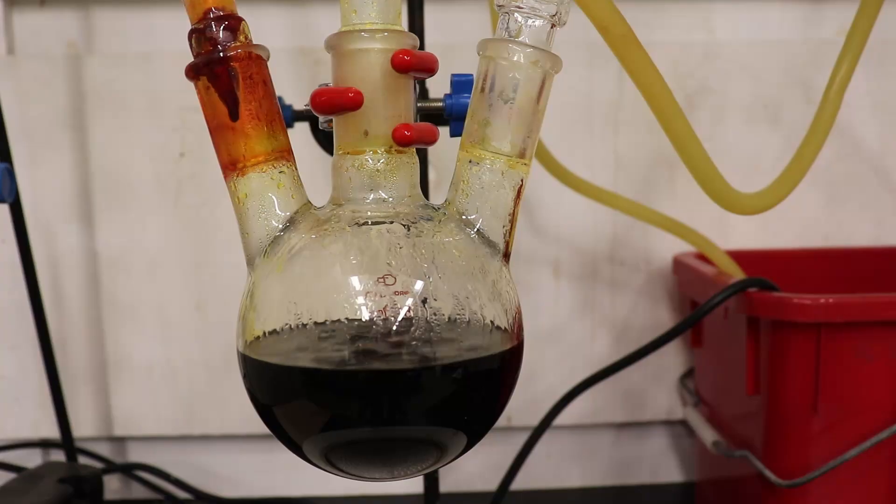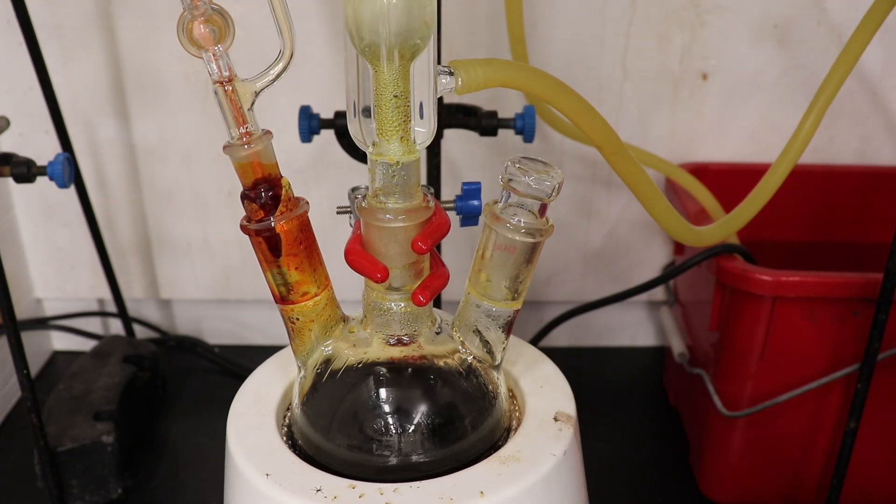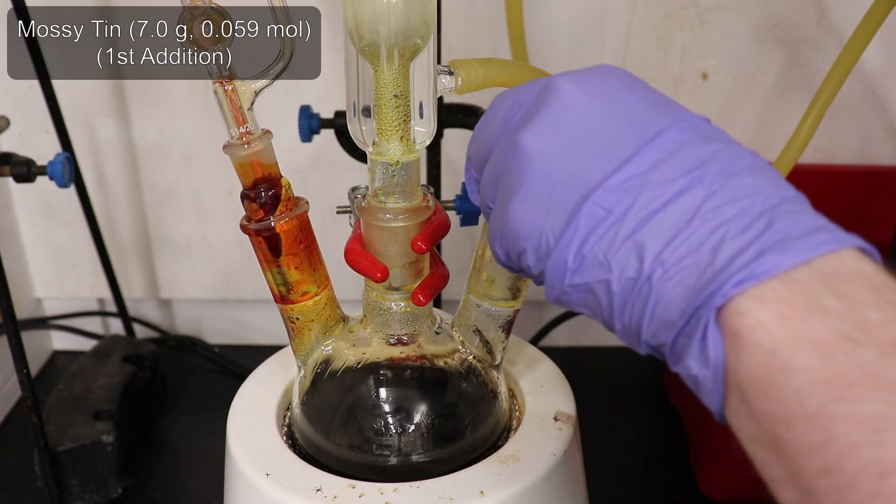Now that bromination is complete, we move to the reduction step. By adding metallic tin, we'll reduce the 1,6-dibromo-2-naphthol to 6-bromo-2-naphthol.